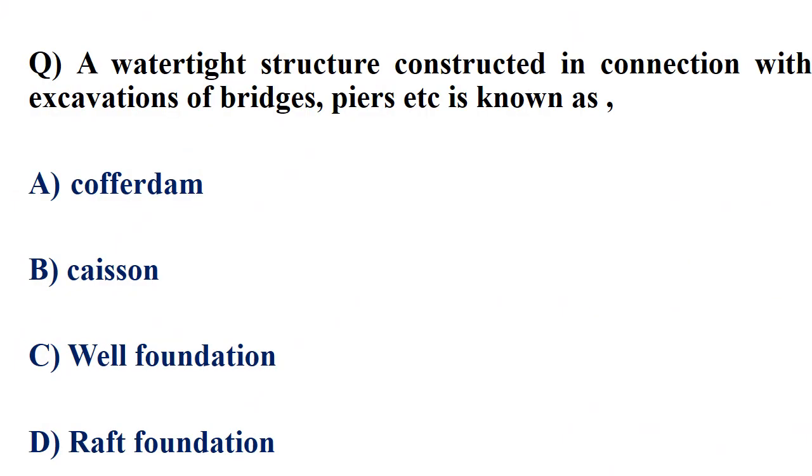First question: A watertight structure constructed in connection with excavations of bridges, piers, etc. is known as? Answer: Caisson.